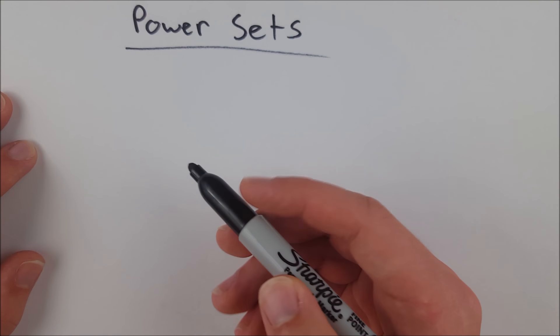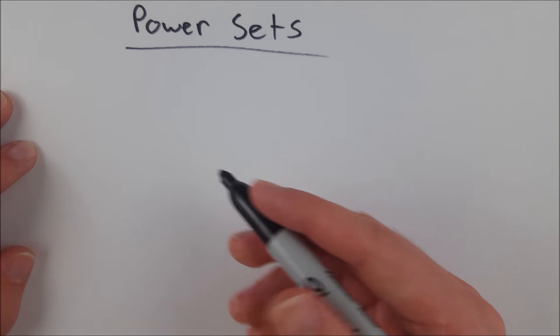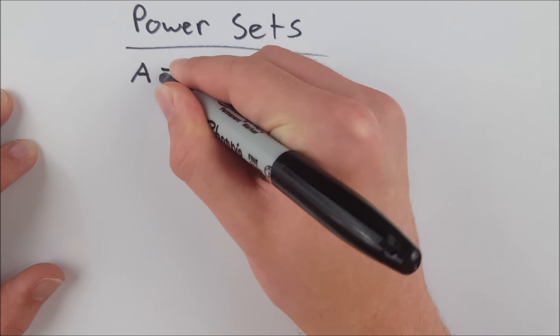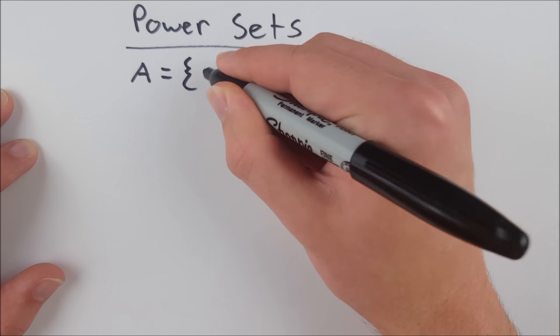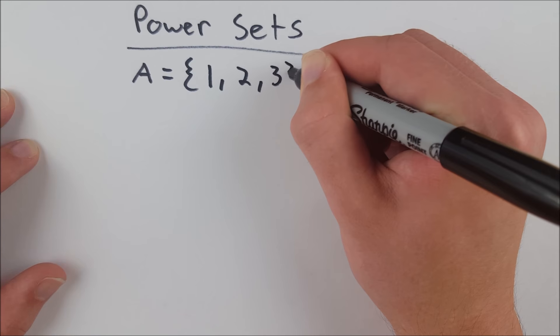So a power set is very simply the set of all subsets of a particular set. So for example, let's first define a set. We'll define a set A. Let's start off easy. Let's say set A is the set containing 1, 2, and 3.